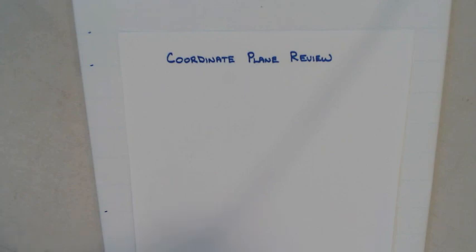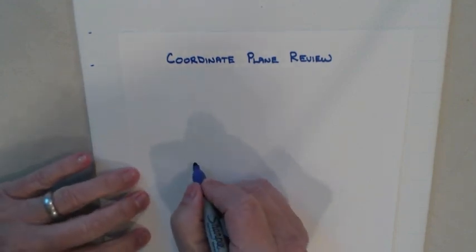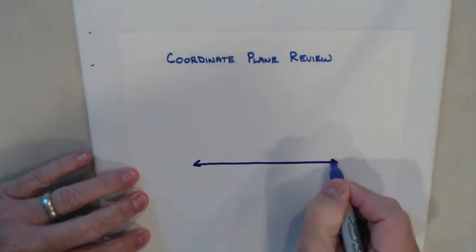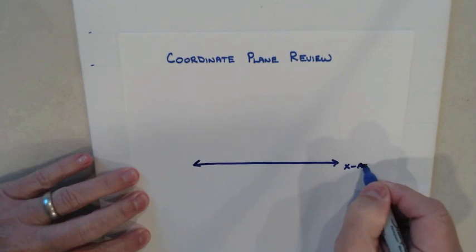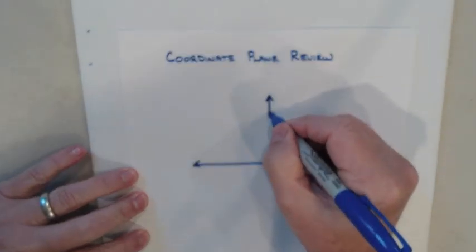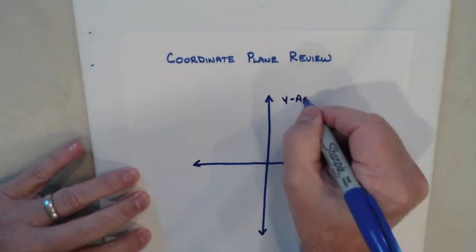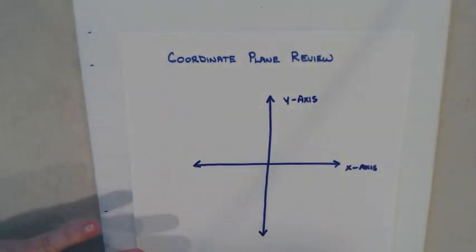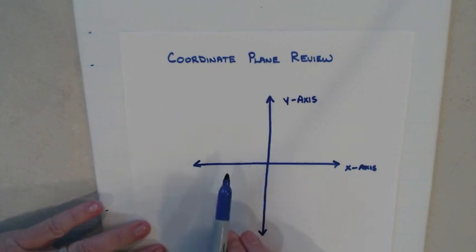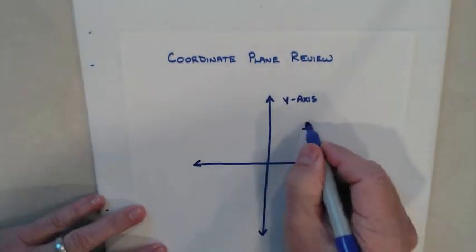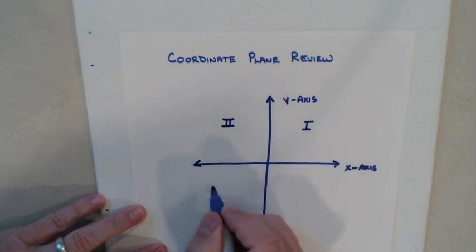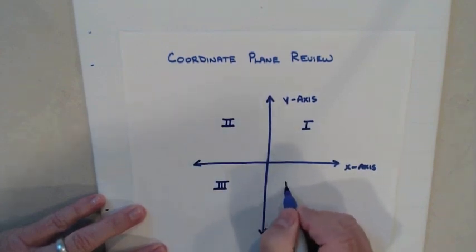We're going to go over a review of the coordinate plane. With inequalities you have one number line, but with a coordinate plane we have two number lines. We've got a horizontal line called the x-axis, and a vertical number line called the y-axis. When you create these two number lines you create four quadrants, and they name these quadrants using Roman numerals: first, second, third, and fourth.